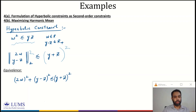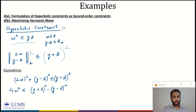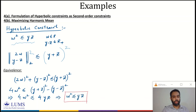Squaring and expanding the norm gives: 2w² + (y − z)² ≤ (y + z)². Moving (y − z)² to the right-hand side gives: 4w² ≤ (y + z)² − (y − z)², which simplifies to 4w² ≤ 4yz — the hyperbolic constraint. This establishes the equivalence between the hyperbolic constraint and the second-order constraint.